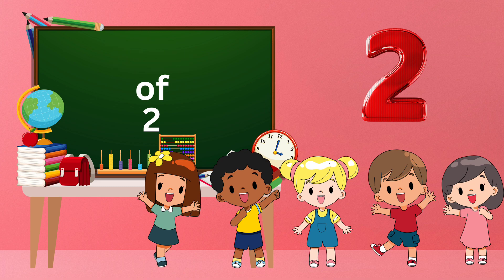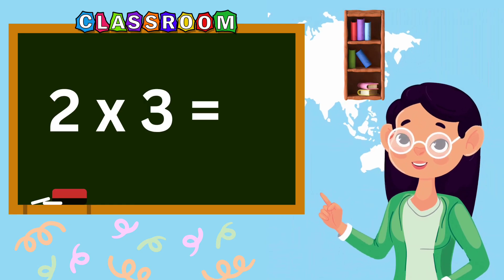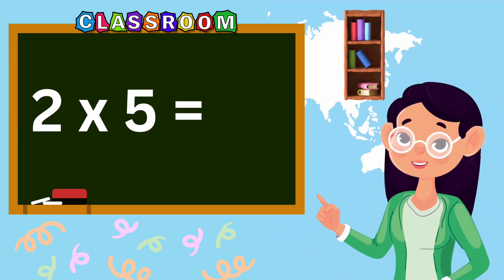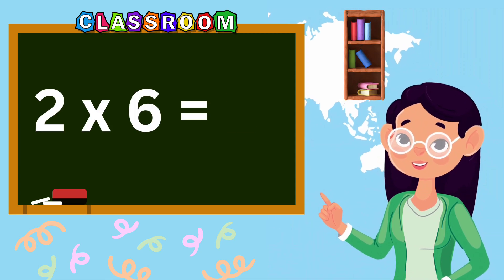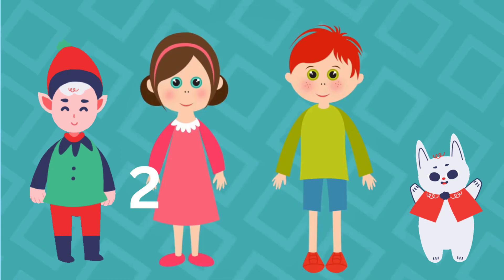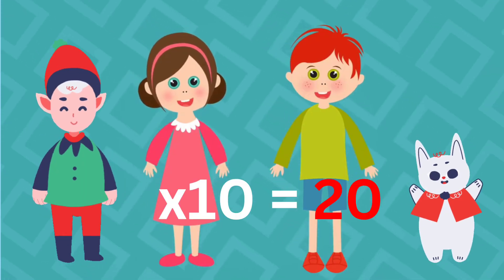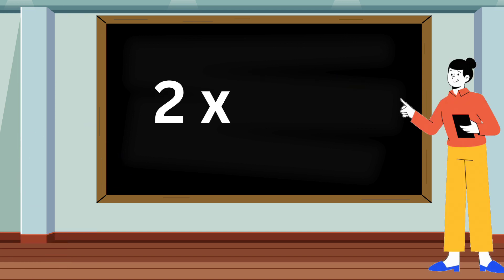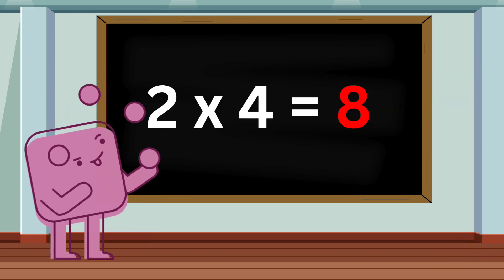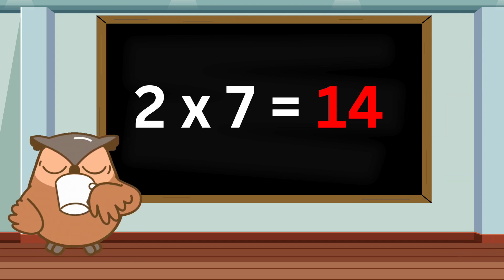Table of Two. Two ones are two. Two twos are four. Two threes are six. Two fours are eight. Two fives are ten. Two sixes are twelve. Two sevens are fourteen. Two eights are sixteen. Two nines are eighteen. Two tens are twenty.